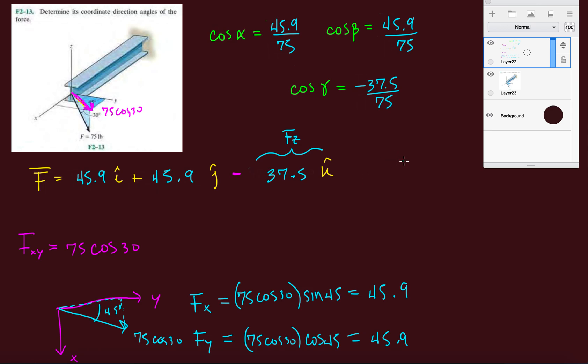Doing the inverse of each one, we have alpha, beta, and gamma. Let's do inverse cosine of 45.9 divided by 75. That's 52.3. This is going to be 52.3 as well. Then inverse cosine of minus 37.5 divided by 75. Look, we get 120. These are your coordinate direction angles, the angles that a vector makes with the x, y, and z axes.